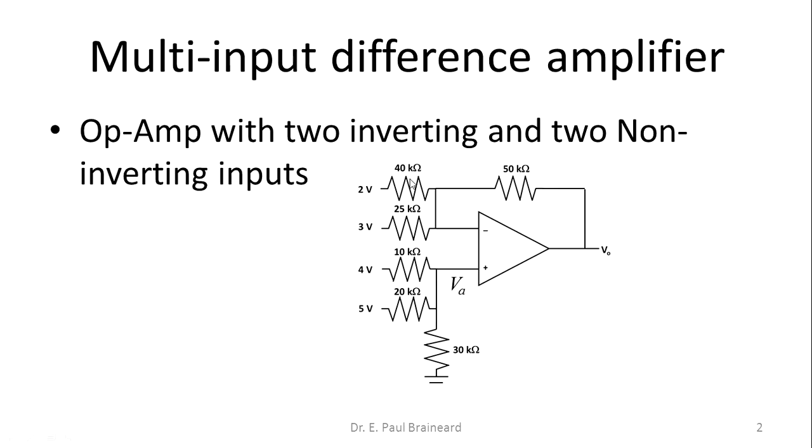If you happen to see here, you have got two inputs at the inverting terminal and two inputs at the non-inverting terminal. Now because of all these four input voltages, let us try to find out the voltage at the output, which is V0.